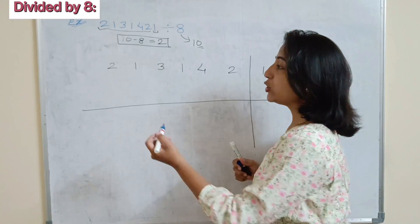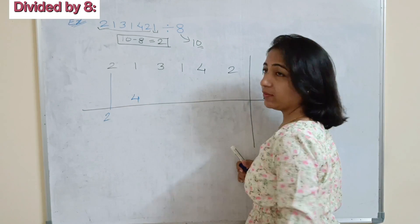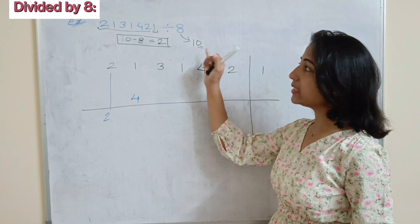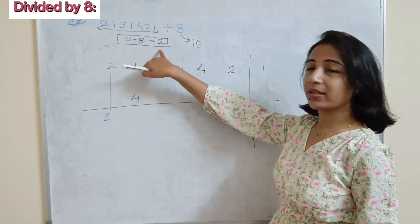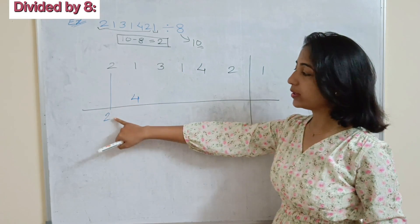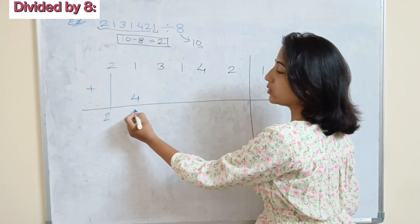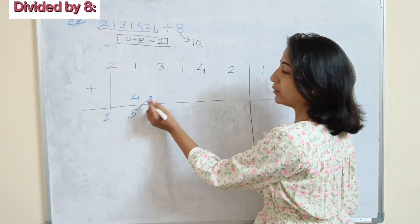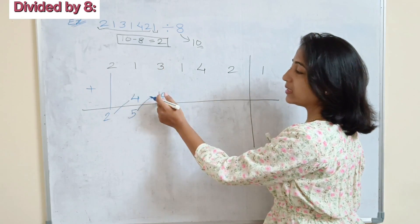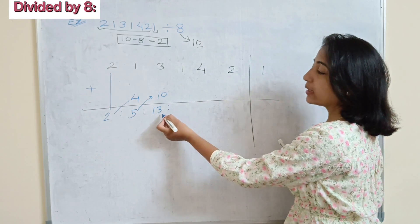Write the first digit 2 as it is. Double of 2 is 4 — we take double because 8 is 2 less than base 10. Add: 1 plus 4 is 5. Double of 5 is 10; add to next digit: 10 plus 3 is 13. We can use a colon symbol for separation.